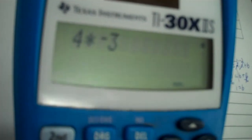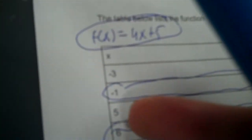Now let's test it. 4 times negative 3 plus 5 should be negative 7, it is. Now put negative 1 in, that's 1. Now 4 times 5 plus 5, that's 25. 4 times 6 plus 5, and that's 29. So that is correct.